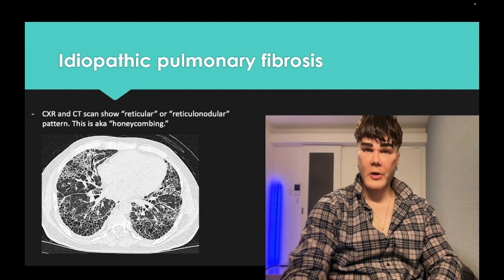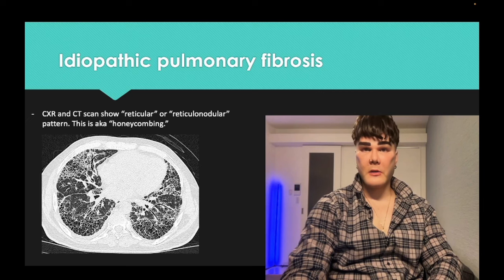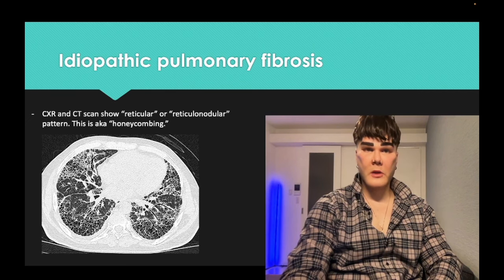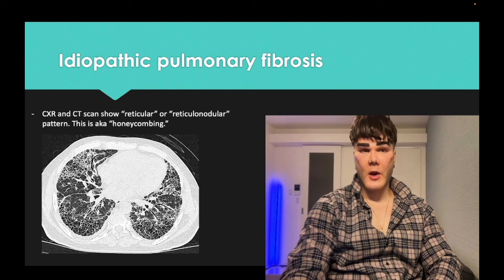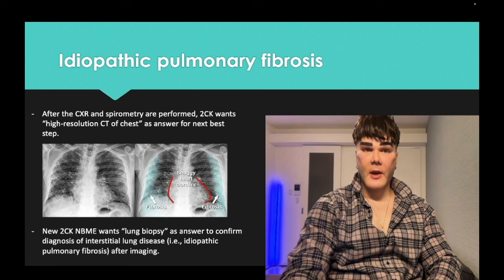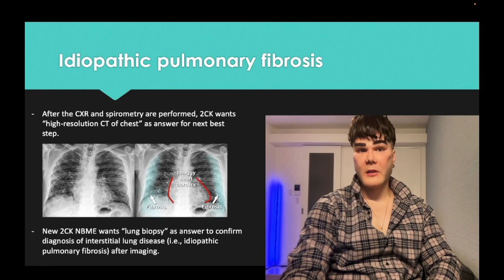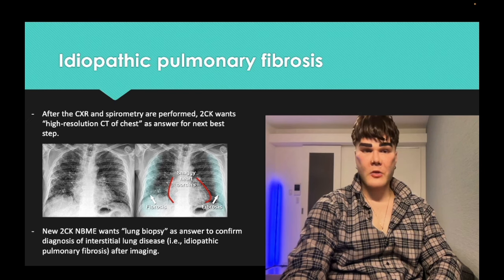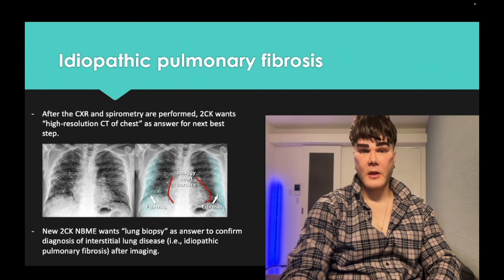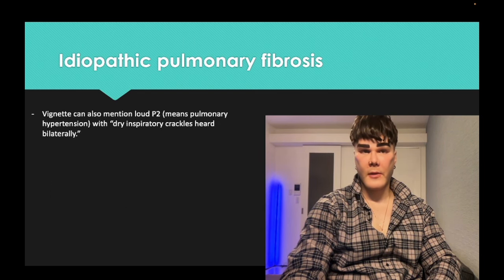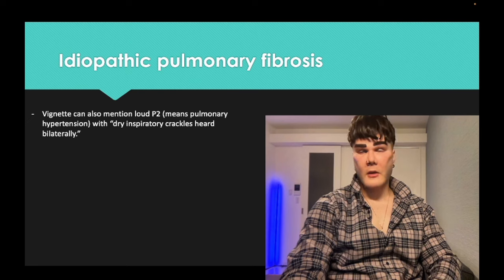Very high yield: reticular and reticulonodular mean fibrosis on USMLE — this is colloquially known as honeycombing, but USMLE won't use that term in stems. Reticular and reticulonodular show up everywhere in NBME exams for fibrosis. For diagnosis you do a chest x-ray followed by CT, and then ultimately biopsy to confirm. The 2CK form assesses that diagnostic sequence.